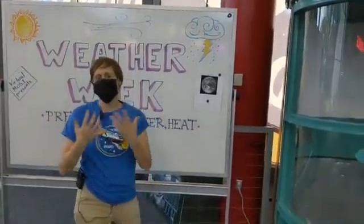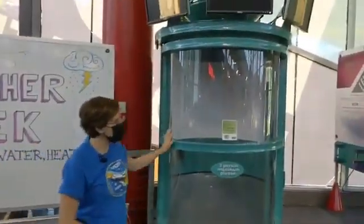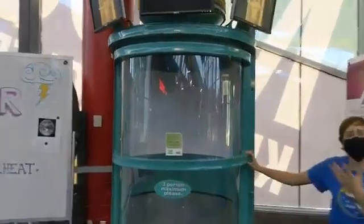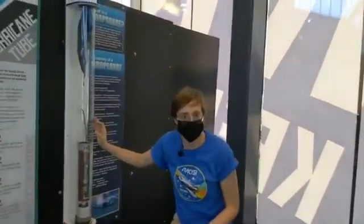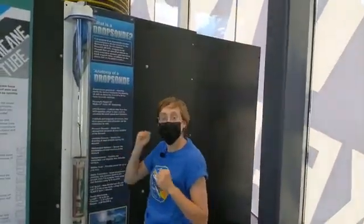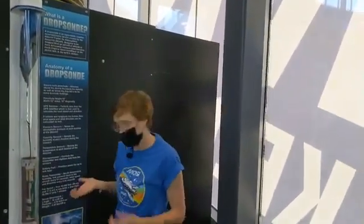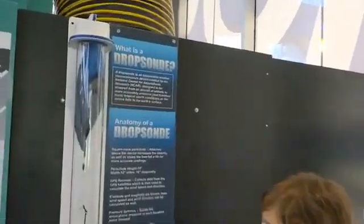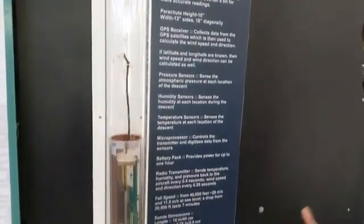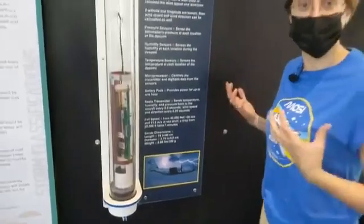Despite that, hurricanes actually serve an important function on our Earth. They help distribute the sun's heat from the equator to the north and south of our hemispheres — they're kind of a temperature regulator for us. Now let's take a look at our simulator. We also have a special device here called a dropsonde. These devices can be ejected from planes flown by very brave pilots above the storm, and they have sensors that collect data such as temperature, speed, and direction — giving scientists enough information to help predict the path of the hurricane and help save lives.